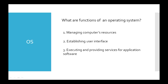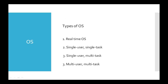The third function of an operating system is to execute and provide services for application software. There are four general types of operating systems, and their use depends on the type of computer and the type of applications that will be run. Real-time operating systems are used to control machinery, scientific instruments, and industrial systems. In general, the user does not have much control over the functions performed by real-time operating systems.